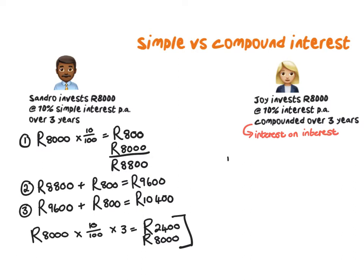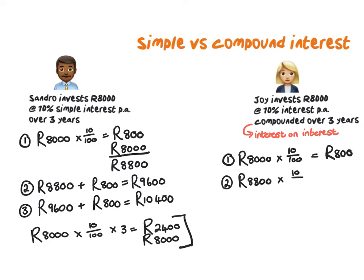Year 1 will look exactly the same. So if Joy also invests 8,000 Rand and also gets 10%, she will also get 800 Rand after the first year — no difference. But for the second year she earns interest on whatever is in her account, which is now 8,800 Rand.